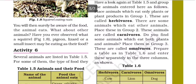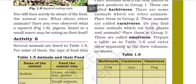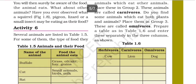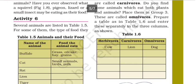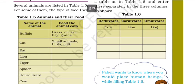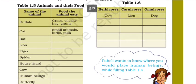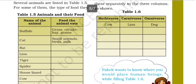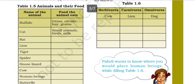So let's see a small activity. This is Activity 6. In this we have Table 1.5, which lists animals and what they eat. For example, a buffalo eats grass, oil cake, and grains.